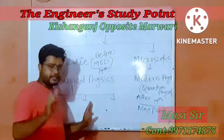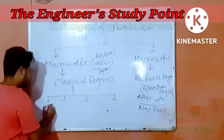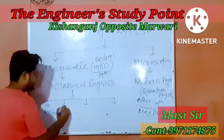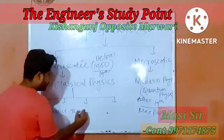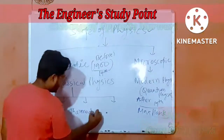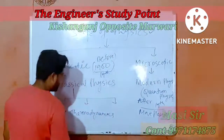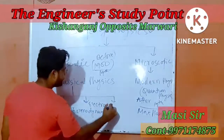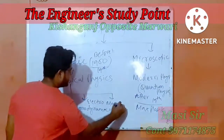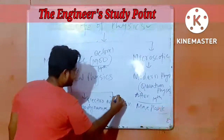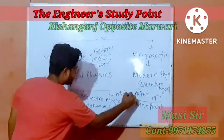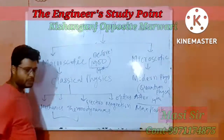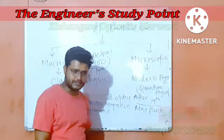Here are four parts of classical physics. First is mechanics, second is thermodynamics, third is electromagnetism, and fourth is optics. These are the two parts we will study in 11th class.